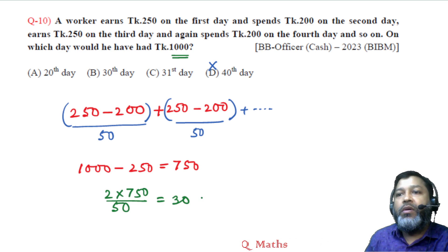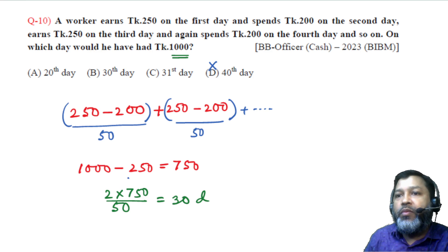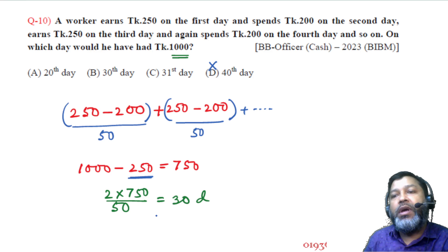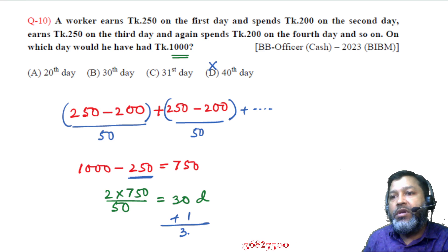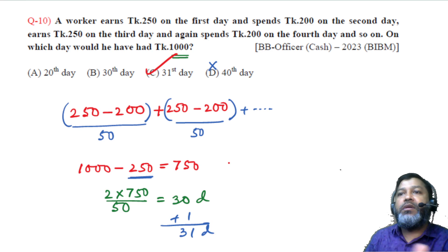After working through the pattern, the worker reaches 1000 taka on the 31st day. The answer is option C, the 31st day.